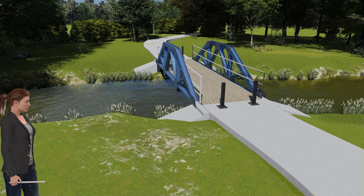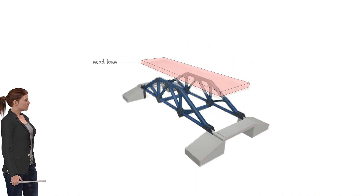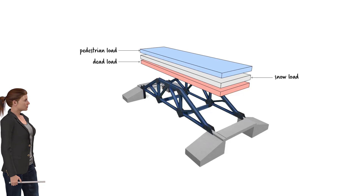Given the dimensions and location of the bridge, wind, earthquake, and other dynamic loads can be ignored. The weights of the deck, snow, and pedestrians can be viewed as uniformly distributed loads. The vehicular weight is to be modeled as two concentrated loads.